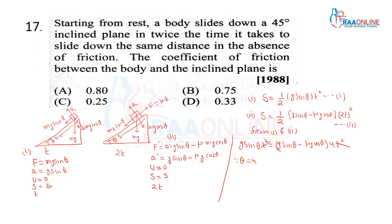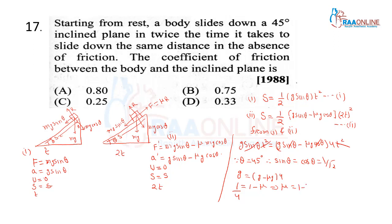Since θ = 45°, sinθ and cosθ are both equal, so they cancel. We get g = (g − μg) · 4. Cancel g. So 1 = (1 − μ) · 4, giving 1/4 = 1 − μ, so μ = 1 − 1/4 = 0.75. We are going with option B.